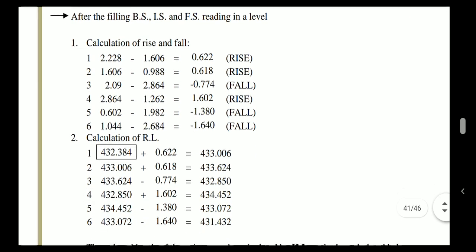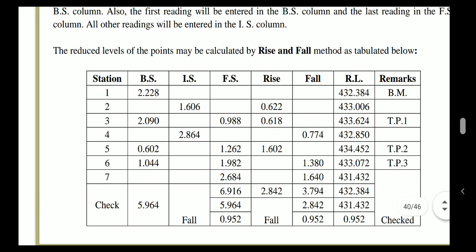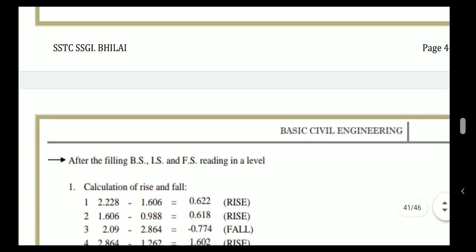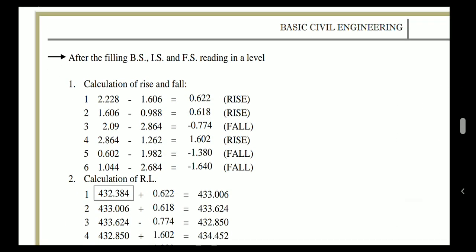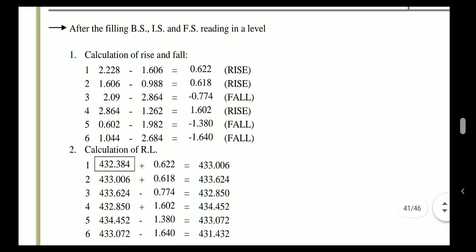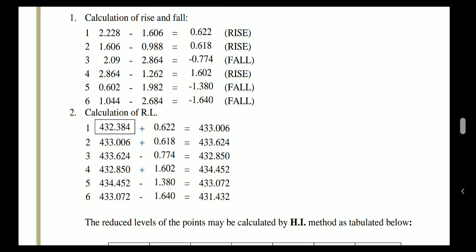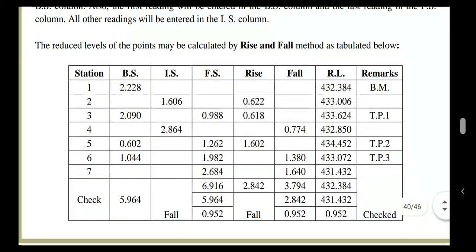Now we calculate the RL for each station. Station 1 RL is 432.384. For station 2, we add the rise of 0.622 to the previous RL: 432.384 + 0.622 = 433.006. For station 3, the previous RL 433.006 plus rise 0.618 gives 433.624. We continue similarly for all remaining stations to find their reduced levels.